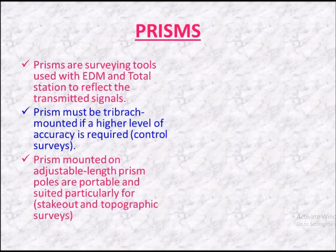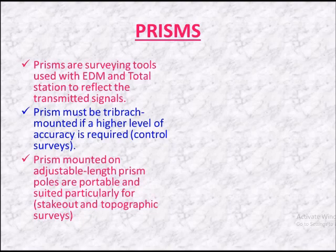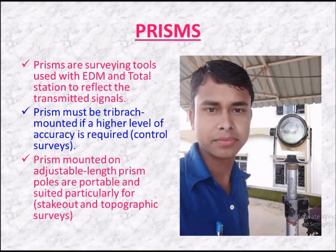Prism. Prisms are surveying tools used with EDM and total station to reflect the transmitted signal. Prisms must be tri-branch mounted if a higher level of accuracy is required for control surveys. Prisms mounted on adjustable-length prism poles are portable and suited particularly for stakeout and topographic surveys.